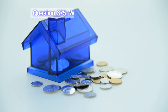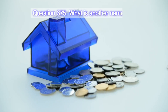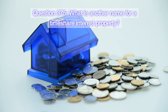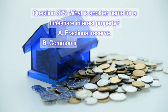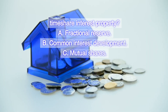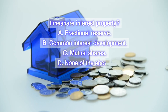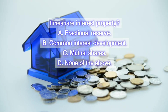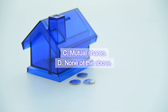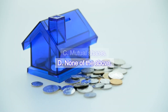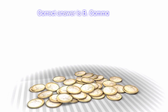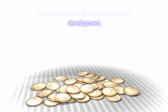Question 375. What is another name for a timeshare interest property? A. Fractional reserve. B. Common interest development. C. Mutual shares. D. None of the above. Correct answer is B. Common interest development.